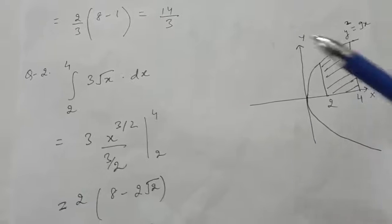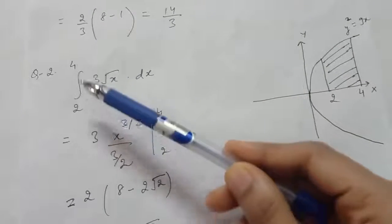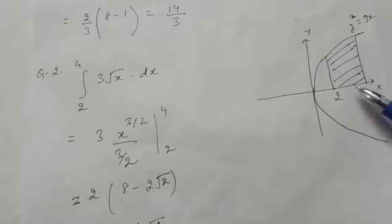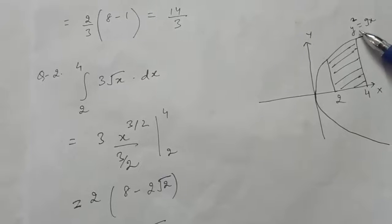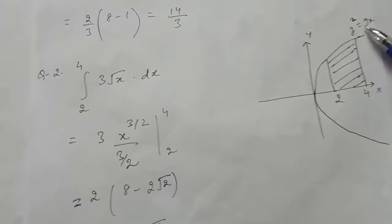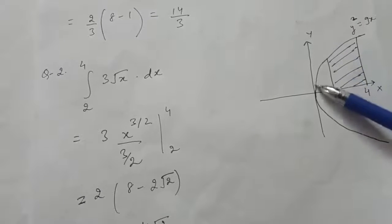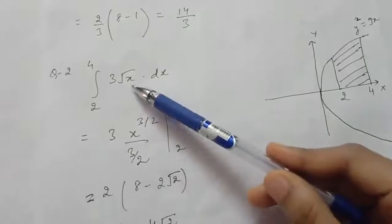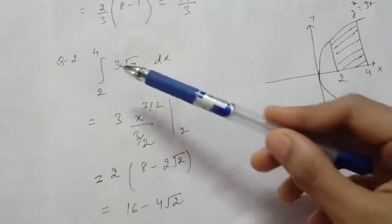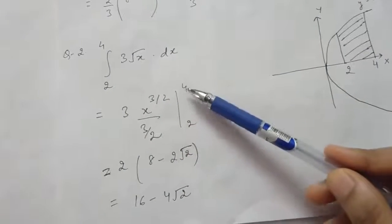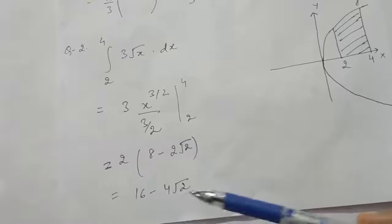The area of this region will be the integral of 3√x dx from the limits 2 to 4. The region is below the curve y² = 9x, so find the value of y in terms of x — it will be ±3√x. But in the first quadrant, y is positive, so we take 3√x. Now solve the integral: x^(3/2)/(3/2) with limits from 2 to 4. Putting the limits gives the answer as 16 − 4√2.